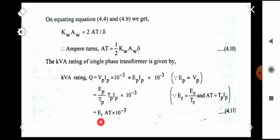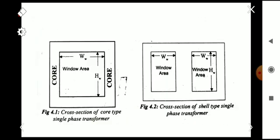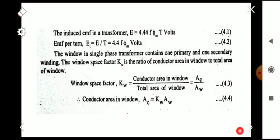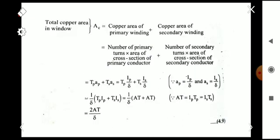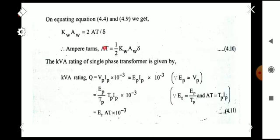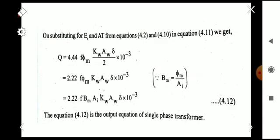We now substitute for E_T and AT. E_T = 4.44 f Φm, and AT = (1/2) K_w A_w δ. Substituting these into Q = E_T × AT × 10⁻³, we get Q = 4.44 f Φm × (K_w A_w δ / 2) × 10⁻³. Simplifying, Q = 2.22 f Φm K_w A_w δ × 10⁻³.